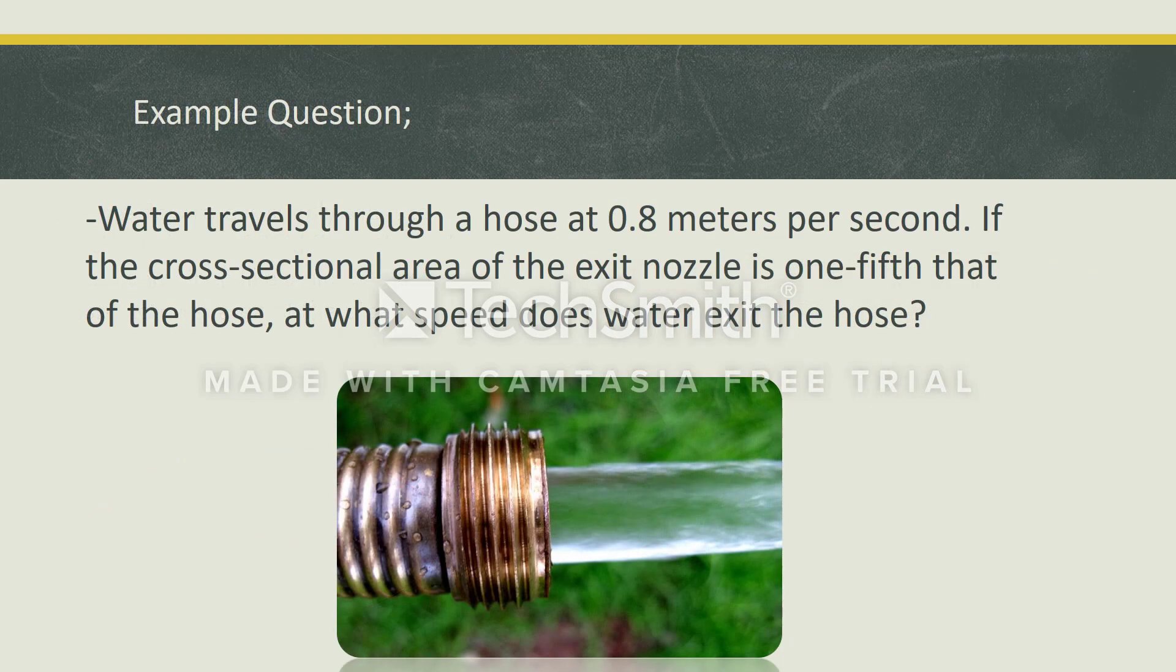So let's look at the example. Water travels through a hose at 0.8 meters per second. If the cross-sectional area of the exit nozzle is one-fifth that of the hose, at what speed does water exit the hose?